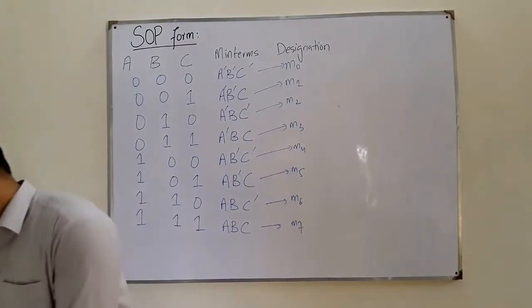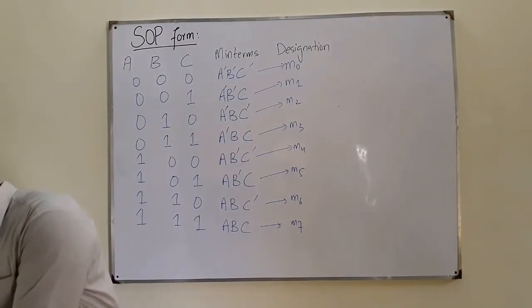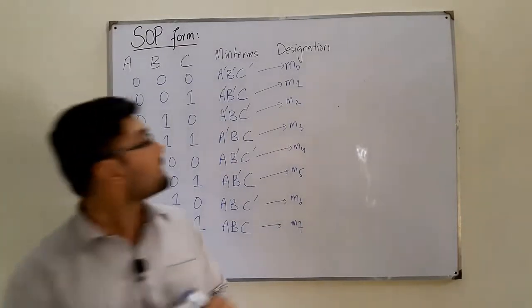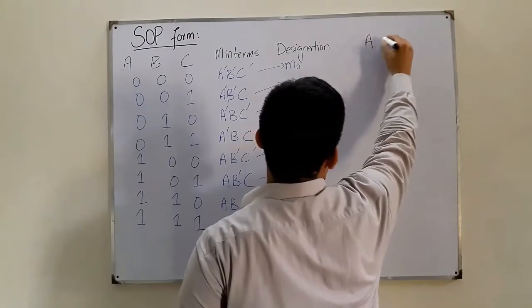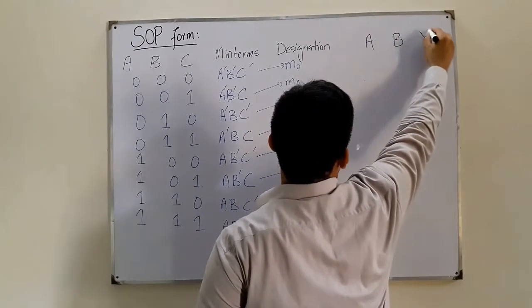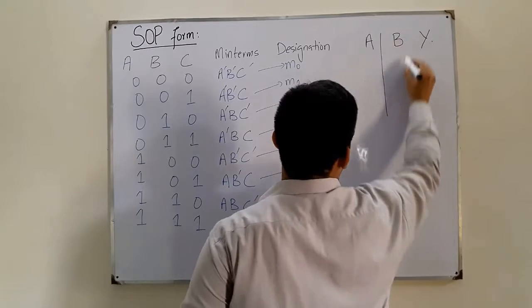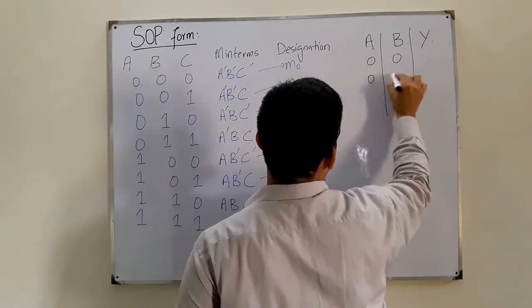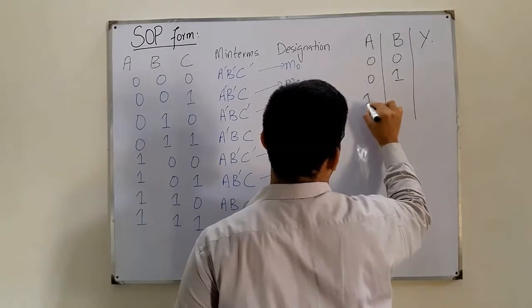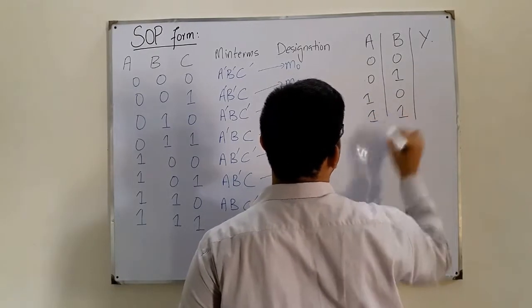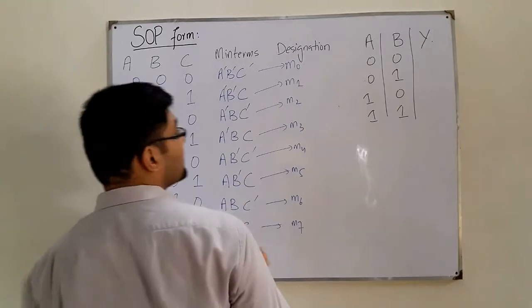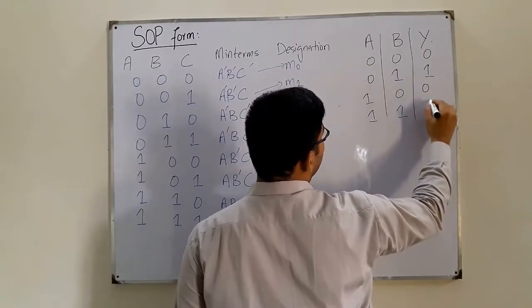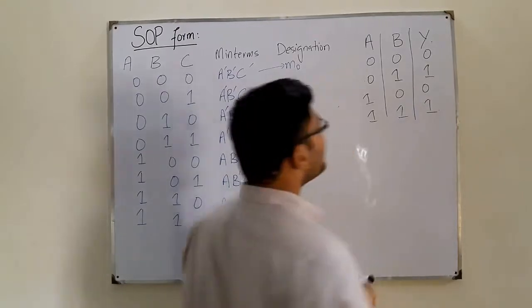Let's take a simple example: from the given truth table, minimize the SOP expression. The table has two variables A and B, giving four input combinations — 0,0; 0,1; 1,0; and 1,1 — and the function Y has values 0, 1, 0, 1.